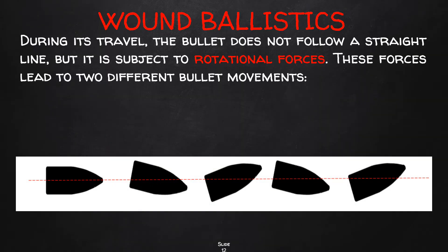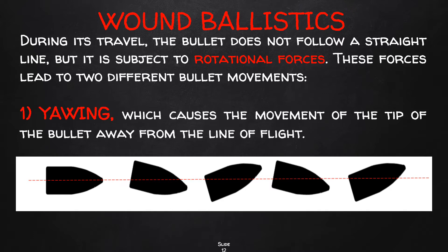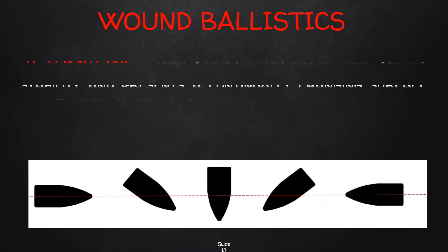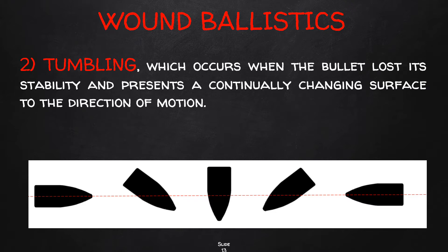During travel, the bullet does not follow a straight line — rotational forces cause different effects on the projectile. One movement is yawing, which refers to the deviation of the longitudinal axis of the bullet, causing movement of the tip away from the line of flight. Another movement is tumbling, which occurs when the bullet loses its stability and presents a continually changing surface to the direction of motion. Tumbling usually occurs when the bullet is damaged by impact against a stationary or intermediate target.